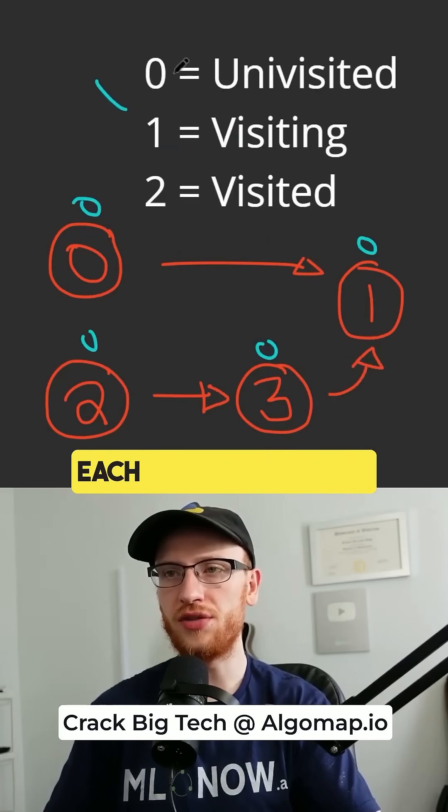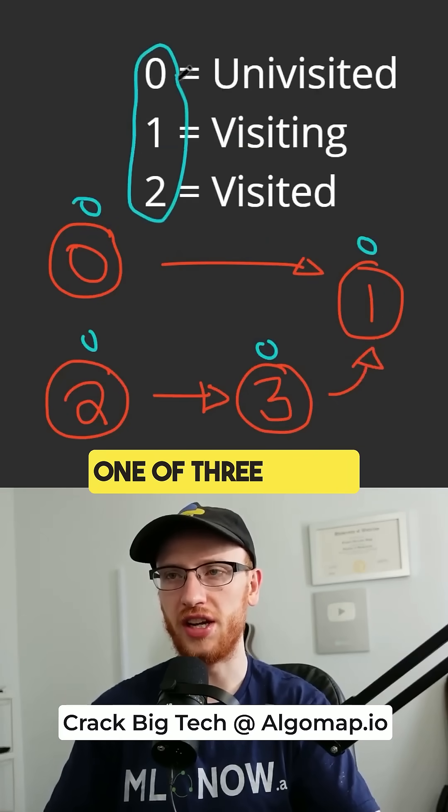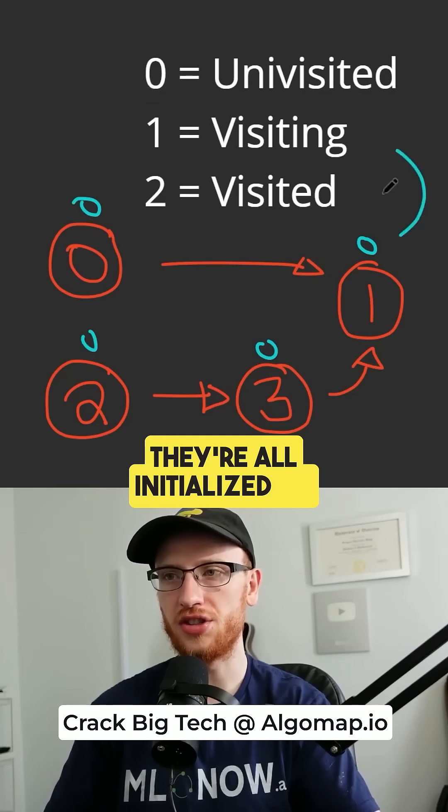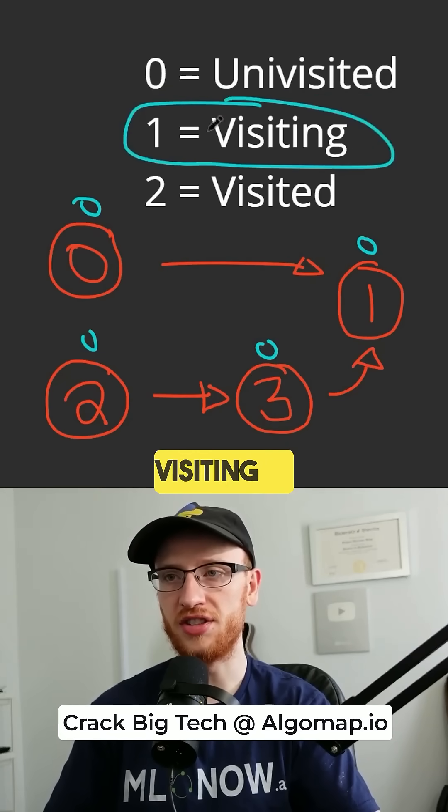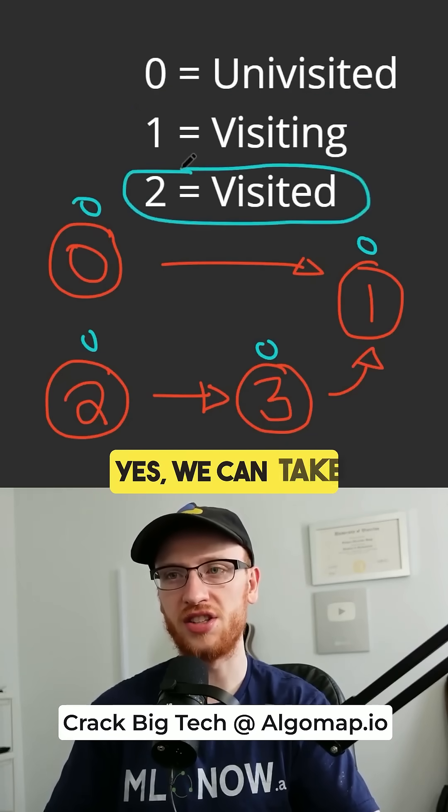Now as we traverse the graph, each of these courses will be in one of three states. 0 is unvisited, that's what they're all initialized to. 1 means we're in the process of visiting it, and 2 means yes, we can take that course.